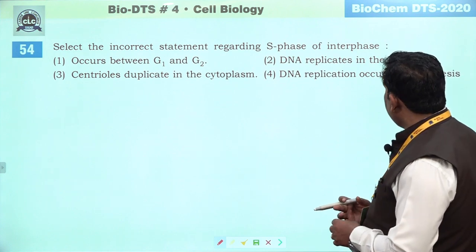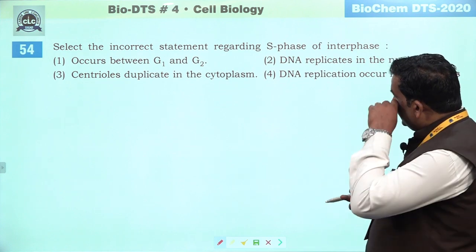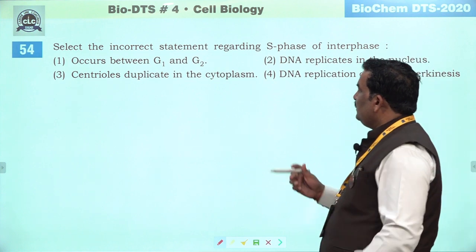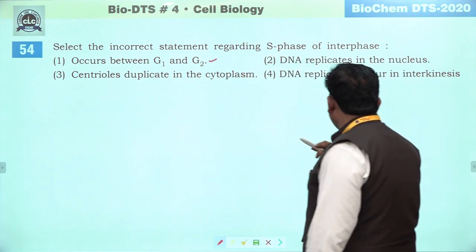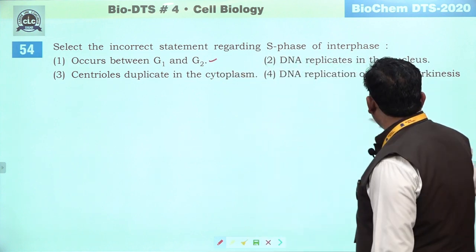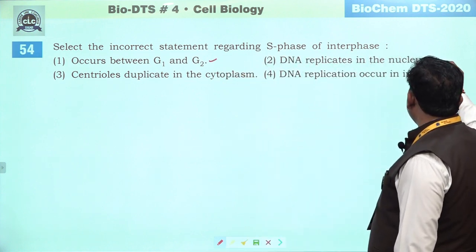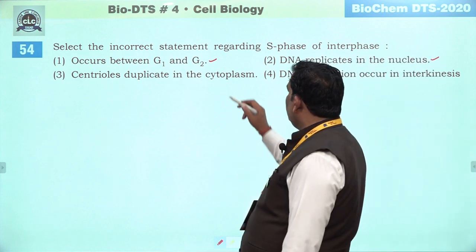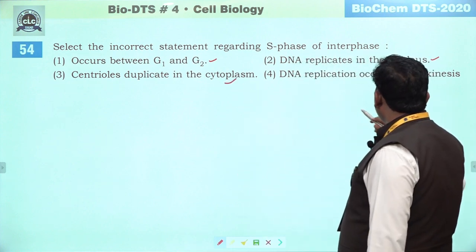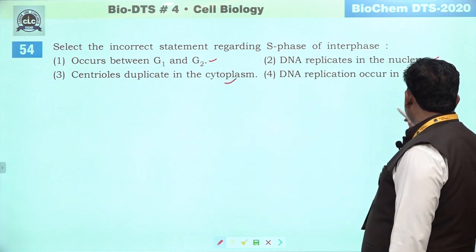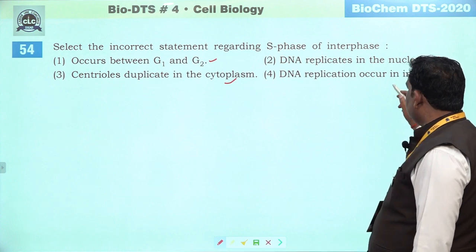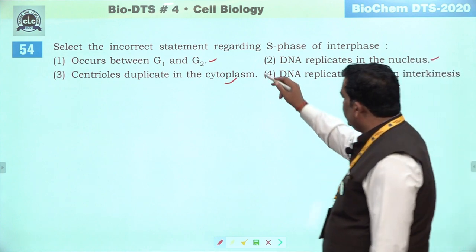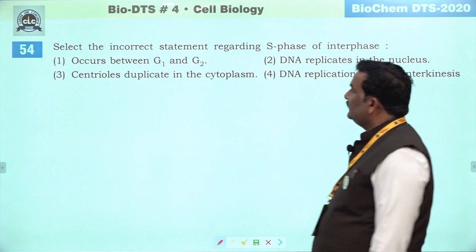Next question: select the incorrect statement regarding S-phase of interphase. Occurs between G1 and G2 — bilkul sahi. DNA replication in the nucleus — sahi hai. Centriole duplicate in cytoplasm — sahi hai. DNA replication occurs in interkinesis — nahi, interkinesis mein nahi hota hai. Fourth is the right answer.